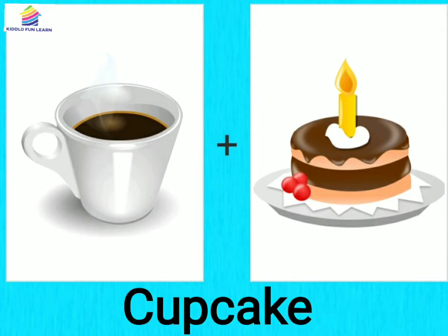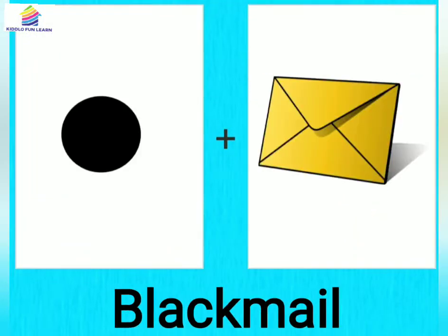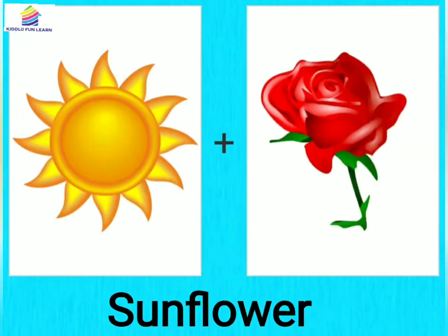Cup plus Cake becomes Cupcake. Green plus Bow becomes Rainbow. Black plus Mail becomes Blackmail. Sun plus Flower becomes Sunflower.